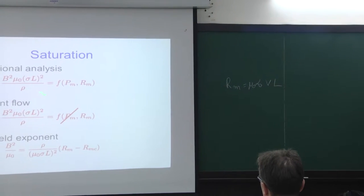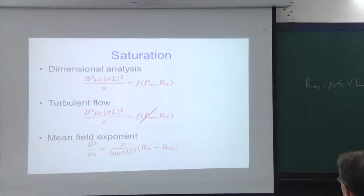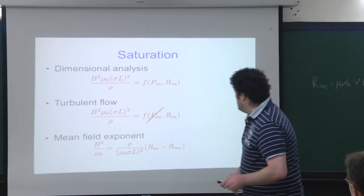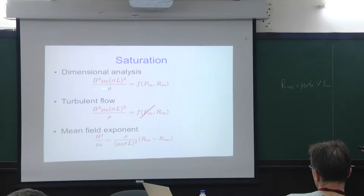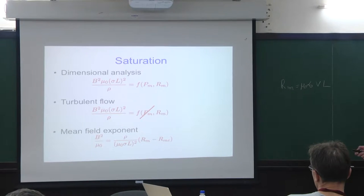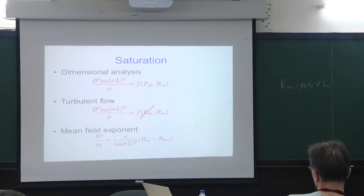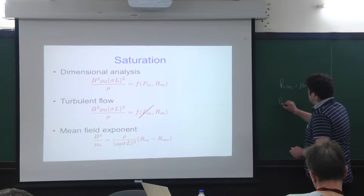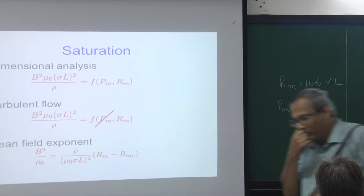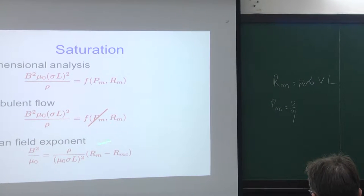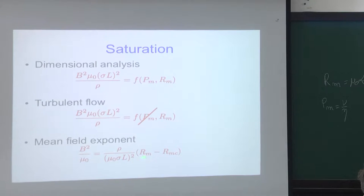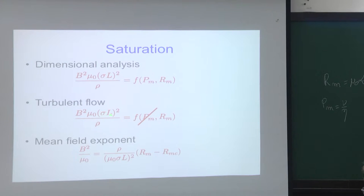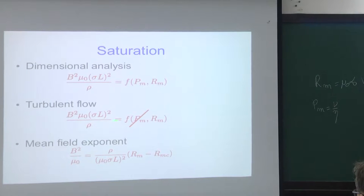Starting from dimensional analysis with parameters B, μ₀, σ, L, ρ, ν (kinematic viscosity), V, and L, a general formula relating magnetic energy to the parameters of the problem can be written. We can make progress by noting that kinematic viscosity only appears through the magnetic Prandtl number Pm = ν/η. For a turbulent flow with kinetic Reynolds number larger than a million, we expect transport of momentum not to be achieved by viscosity. Therefore ν will not appear in this scaling law, and we can drop Pm, recovering a predicted law where magnetic energy is a function of Rm only.